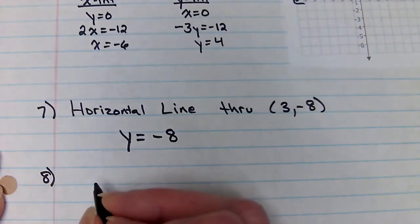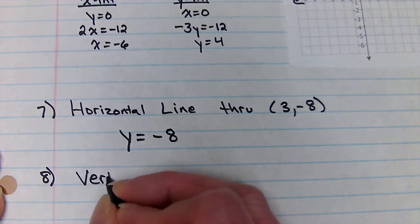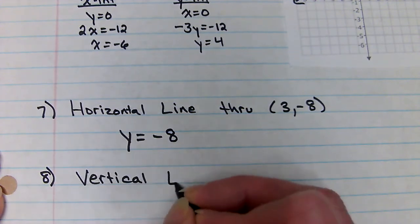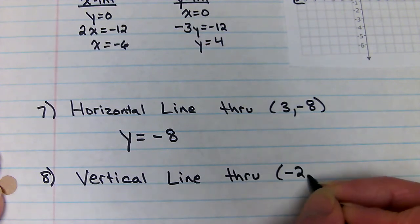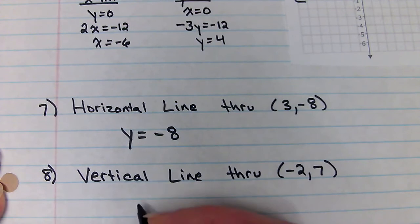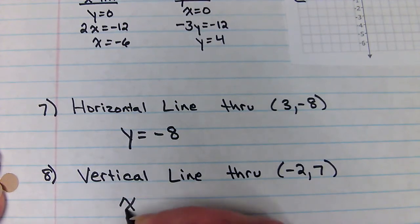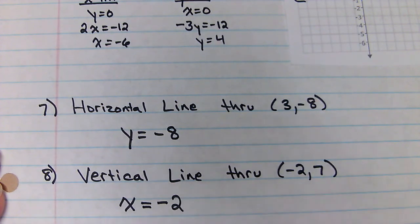Number eight, vertical line through negative two, seven. Well, vertical line is just an x equals. Done.